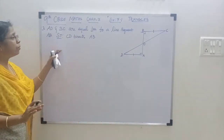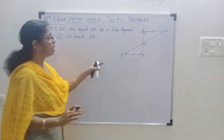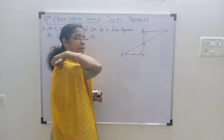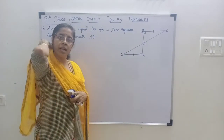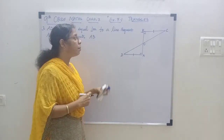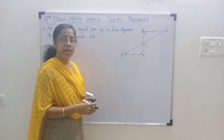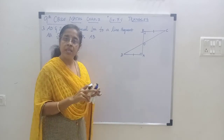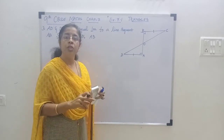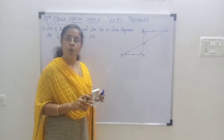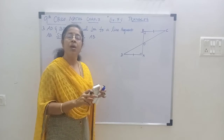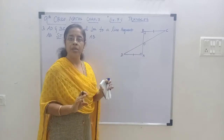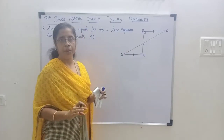Now we have to prove that CD bisects AB. It means CD bisects AB in the sense you have to prove AB is divided into two equal parts at the point O — that is, OA is equal to OB. That's what we have to prove.